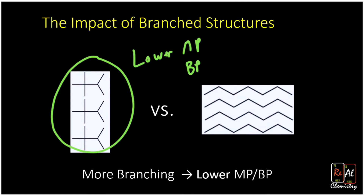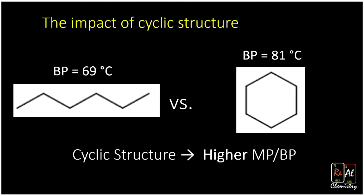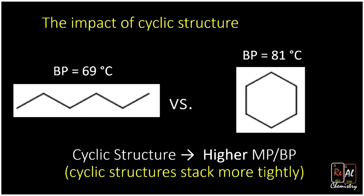Lastly, let's talk about structure shape in terms of being cyclic or linear. On the left we have hexane — linear, not in a ring. On the right we have cyclohexane. Going from the linear compound, which had a boiling point of 69 degrees Celsius, to the cyclic compound, its boiling point goes up by about 12 degrees Celsius. The take-home point is cyclic structures have higher melting points and boiling points because they stack more tightly. Cyclic structures can't vary their shapes as much as linear structures, allowing them to form tight stacks that are hard to pull apart, and hence hard to melt or boil.